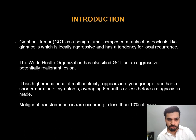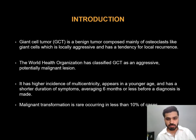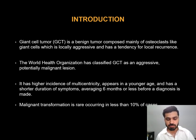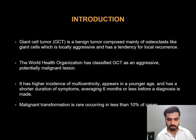Starting with the introduction, GCT is a benign tumor composed mainly of osteoclast-like giant cells which is locally aggressive and has a tendency for local recurrence. The World Health Organization has classified GCT as an aggressive potentially malignant lesion. Malignant transformation is rare, occurring in less than 10% of cases.